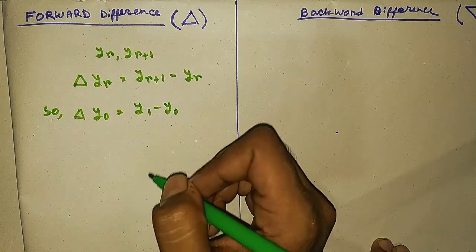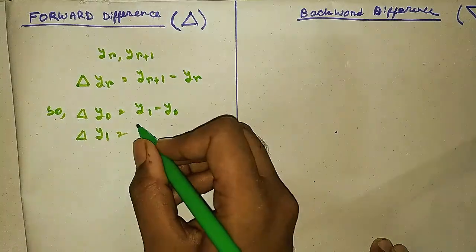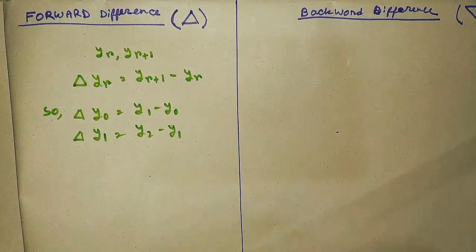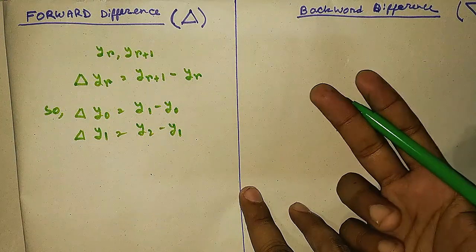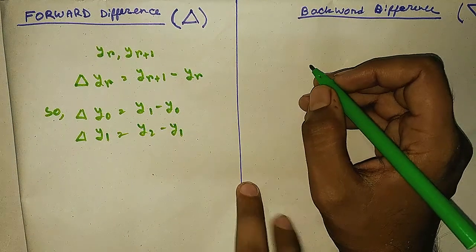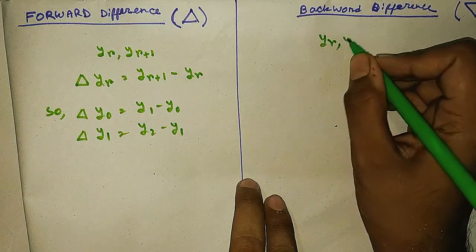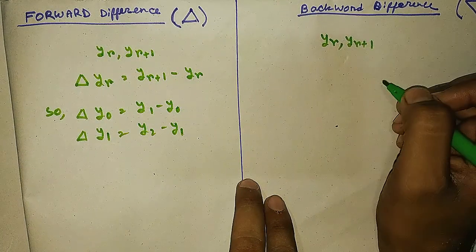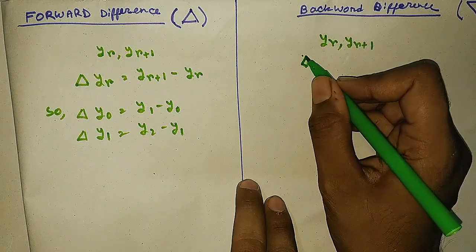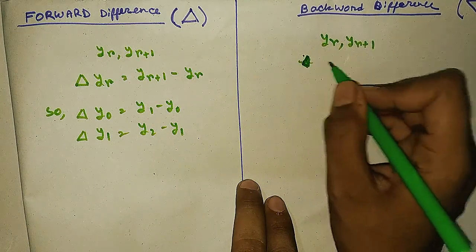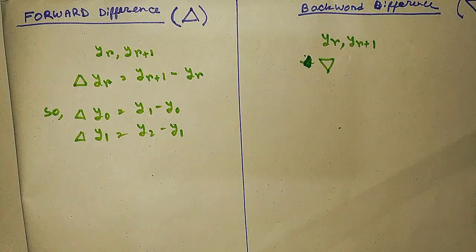Now let us find delta y1 — again it is the next suffix minus the current suffix. Now we find the backward difference. We have seen the forward direction and backward direction; now we understand why it is called backward direction. The backward difference means we subtract the previous suffix from the current suffix.